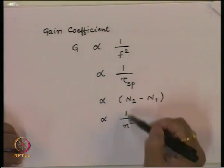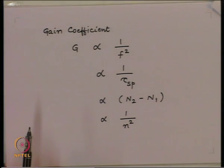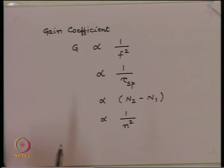For given parameters like population inversion and spontaneous lifetime, the gain is inversely proportional to the square of the frequency. That means lower the frequency, higher will be the gain — in other words, a system can be lased very easily at low frequencies compared to high frequencies. That is the reason creating a laser at longer wavelengths is relatively easier than making lasers operate at shorter wavelengths.